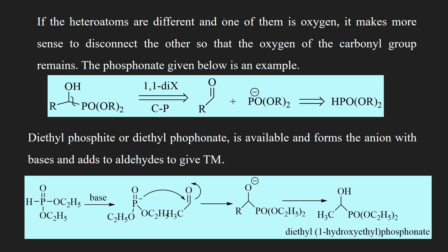Here is another example of 1,1-di-X relationship. If the heteroatoms are different and one of them is oxygen, it makes more sense to disconnect the other so that the oxygen of the carbonyl group remains intact. The phosphonate given below is an example. The nucleophilic synthon can be made by deprotonation of dialkyl phosphonate. We must know that diethyl phosphite or diethyl phosphonate is available commercially, and in the presence of base, they form an anion. When the anion reacts with an aldehyde, we obtain the target molecule, which is diethyl 1-hydroxyethyl phosphonate.